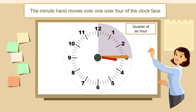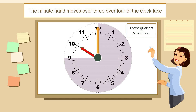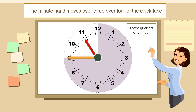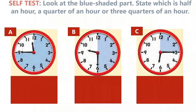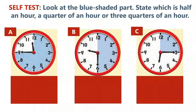The minute hand moves over one quarter of the clock face — this is called a quarter of an hour. The minute hand moves over three quarters of the clock face — this is called three quarters of an hour.